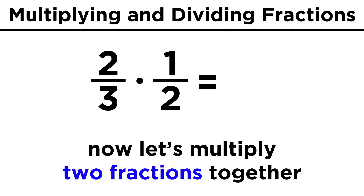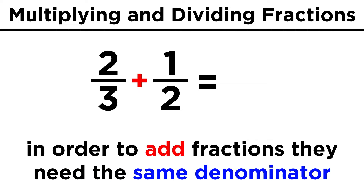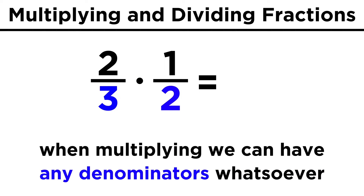Now let's see what happens when we multiply two fractions. This is a little bit different from adding fractions, because when we add two fractions, they must have the same denominator, and then the denominator stays the same while we add the numerators. With multiplication, we can multiply any two fractions together — they don't have to have the same denominator — and we end up multiplying the terms in both the numerator and denominator.